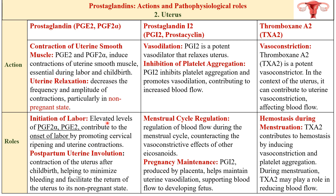Elevated levels of PGF2α and PGE2 contribute to the onset of labor by promoting cervical ripening and uterine contractions, bringing those rhythmic contractions during childbirth. After the child is born, they help contract the uterus, minimizing bleeding after childbirth and facilitating the return of the uterus to its non-pregnant state. Prostacyclin, as a vasodilator that inhibits platelet aggregation, promotes vasodilation and contributes to increased blood flow to the uterus.